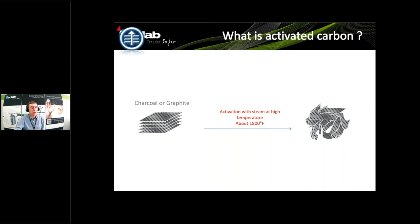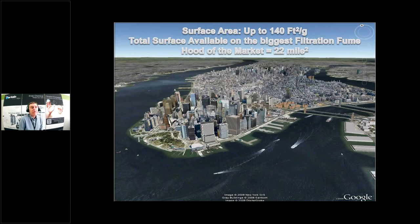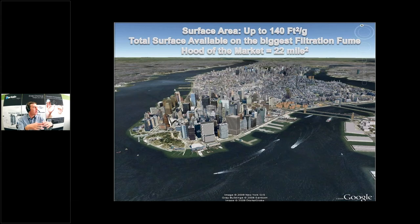If you calculate the total surface developed by the activated charcoal embedded in the biggest green fume technology, the total carbon surface is almost equal to the surface area of the island of Manhattan — or roughly the size of central Paris. All this surface is available to trap gases and vapors through physisorption or chemisorption.